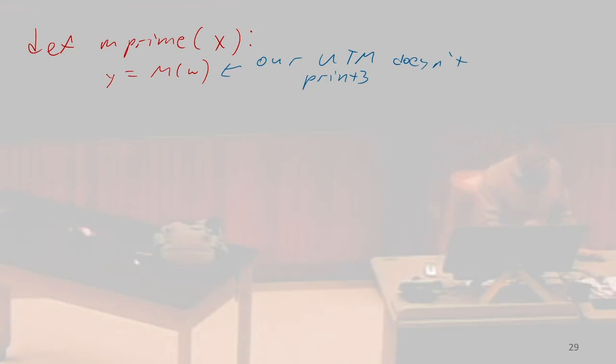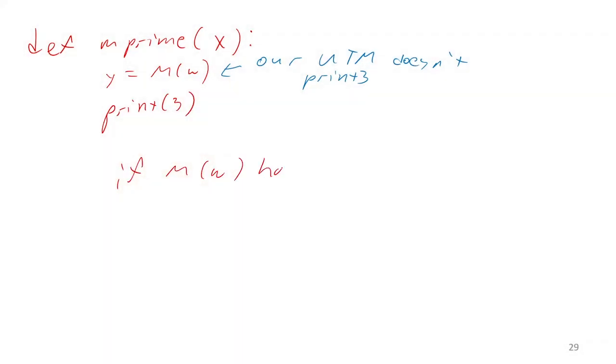But as soon as we get past that line, we're just going to print 3. So now in this case, we can say if M on W halts, we definitely print 3.